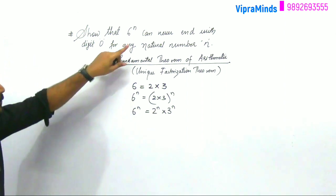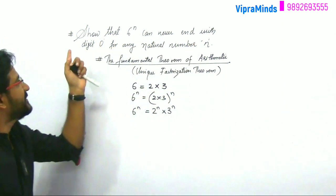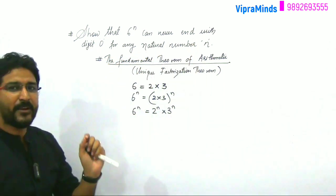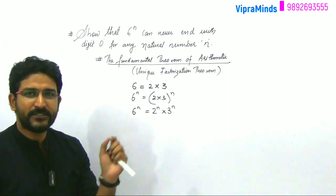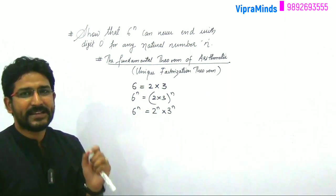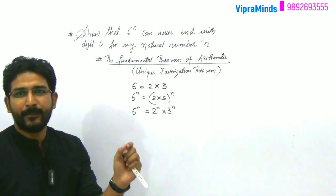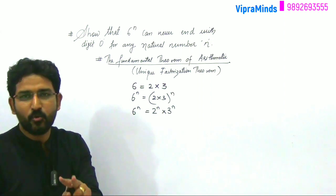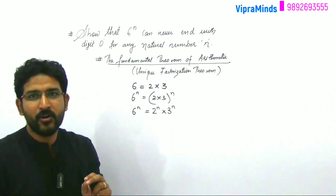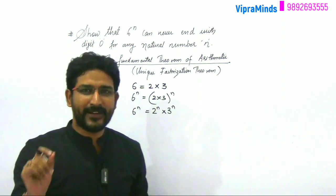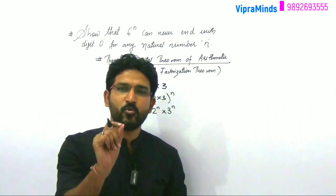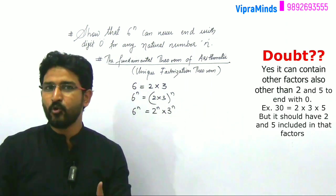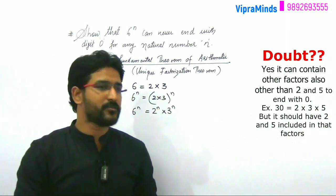Now, the question asks: can 6^n never end with digit 0 for any natural number n? Any number that ends with 0 will always have both 2 and 5 as prime factors. Not just 2 and not just 5 — both 2 and 5 must be present as factors for a number to end in 0.